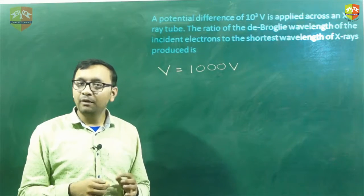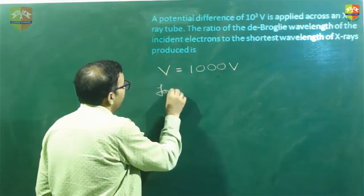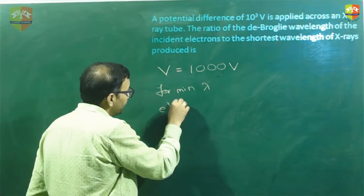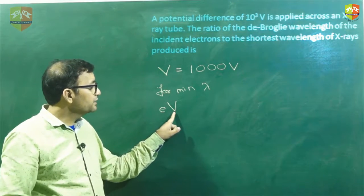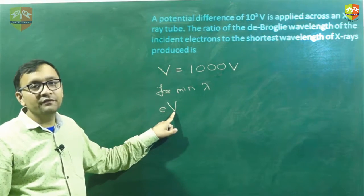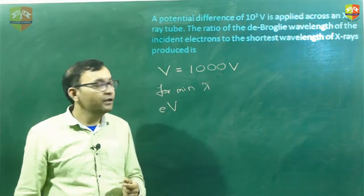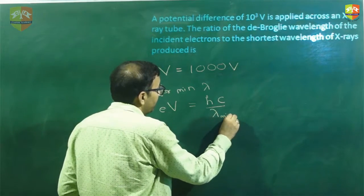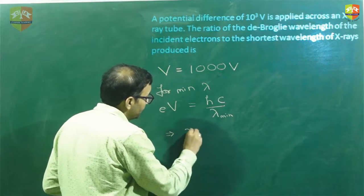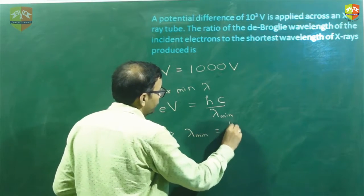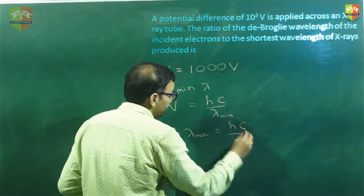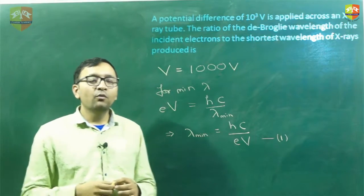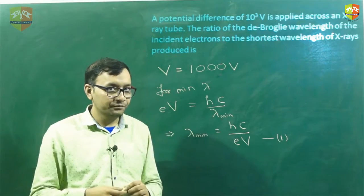So if the entire kinetic energy of one electron gets converted into one photon's energy, that gives maximum energy. If photon energy is maximum, frequency will be maximum, and if frequency is maximum, wavelength will be minimum. So for minimum wavelength, we have the entire kinetic energy which is e times v, equal to hc by lambda minimum. This gives us minimum wavelength equals hc divided by e times v.